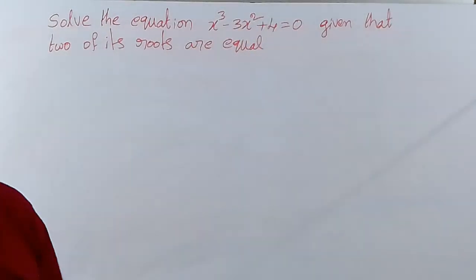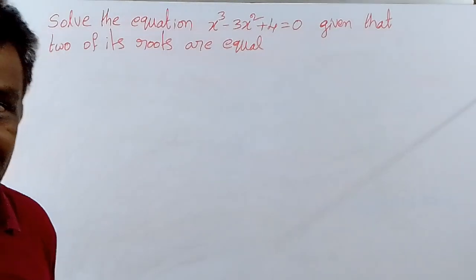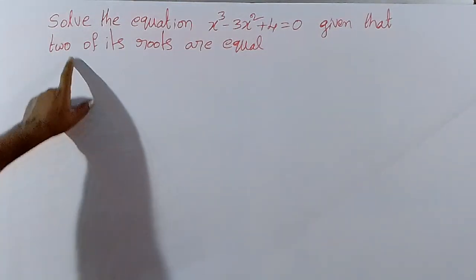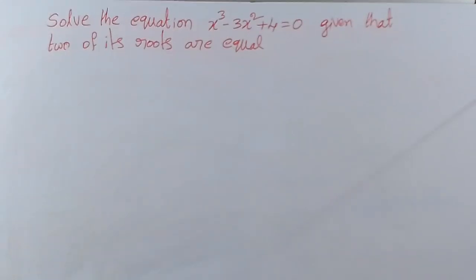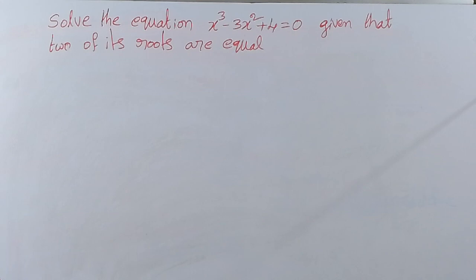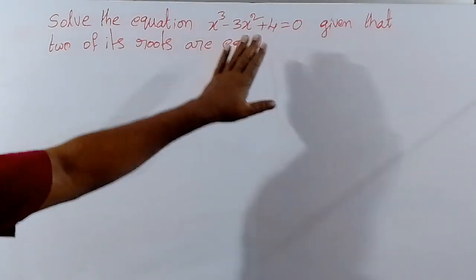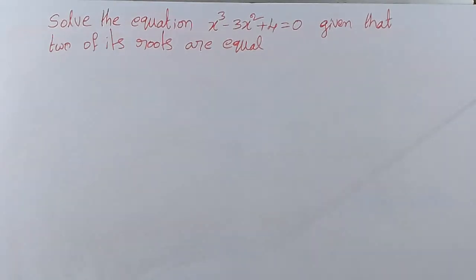It is a cubic equation, so three roots are possible. On the three roots, two roots are equal. You will find out the three roots. Solve the equation means find the roots — zeros or roots. Equation roots and polynomial zeros — find the zeros of the equation.